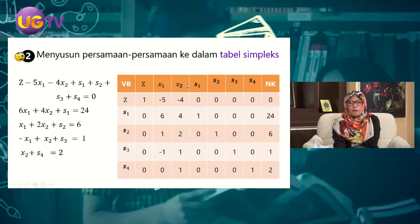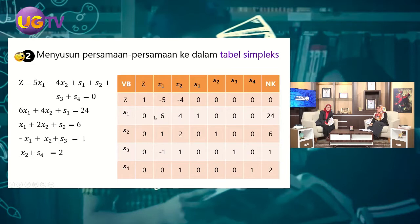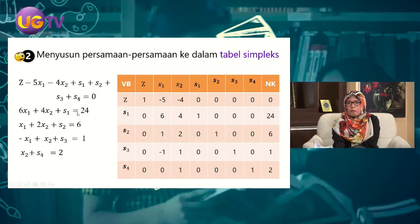Fungsi tujuan dimasukkan pada baris pertama: koefisien Z adalah 1, X1 adalah -5, X2 adalah -4, dan koefisien slack variable pada fungsi tujuan adalah 0 semua, nilai kanan juga 0. Pada baris S1, Znya adalah 0, X1 koefisiennya 6, X2 koefisiennya 4, S1 koefisiennya 1, sedangkan S2, S3, dan S4 nilainya 0, dan nilai kanannya adalah 24.